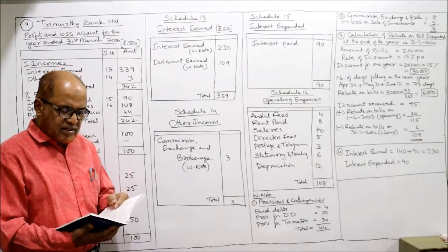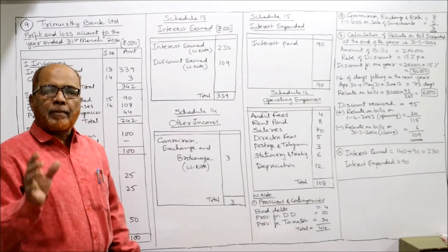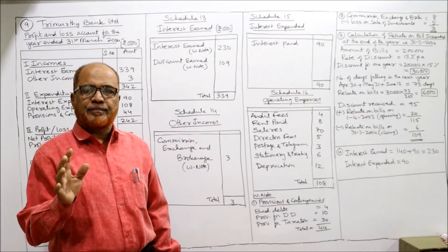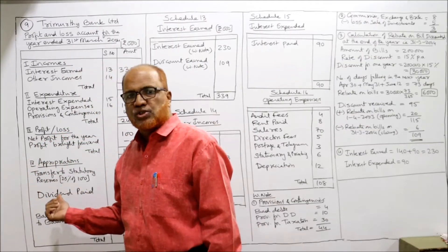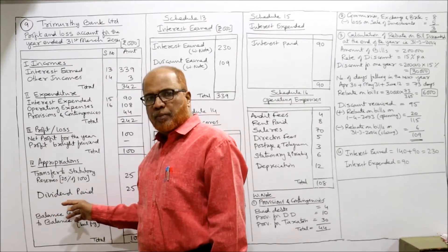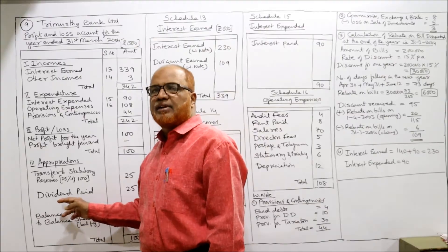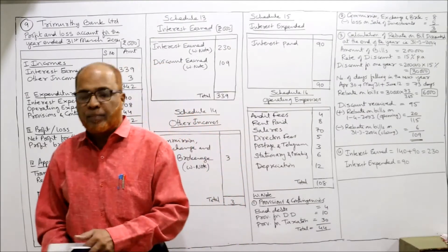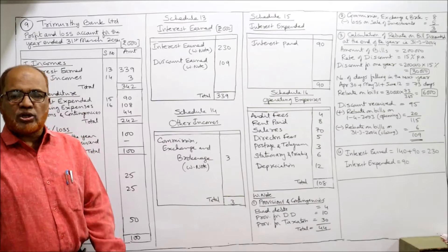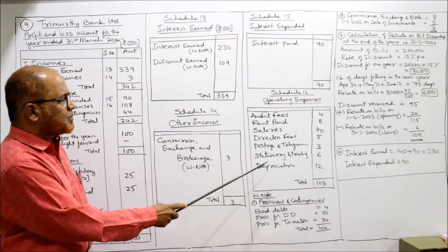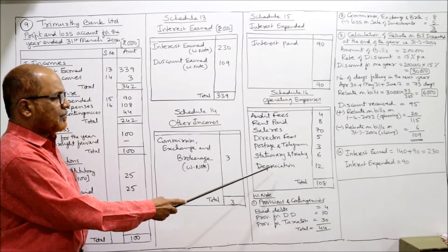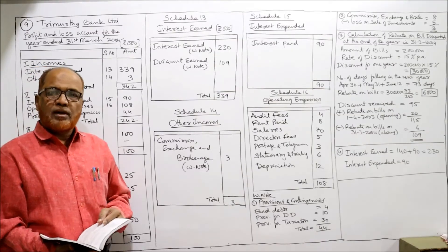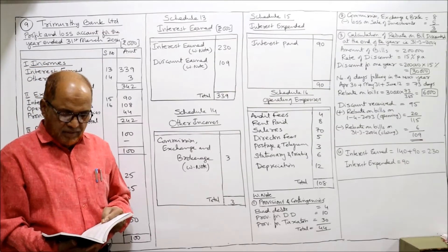Dividend paid or proposed dividend will be taken under appropriations. Depreciation is an item of operating expenses. Now some new points are given in the adjustment section.